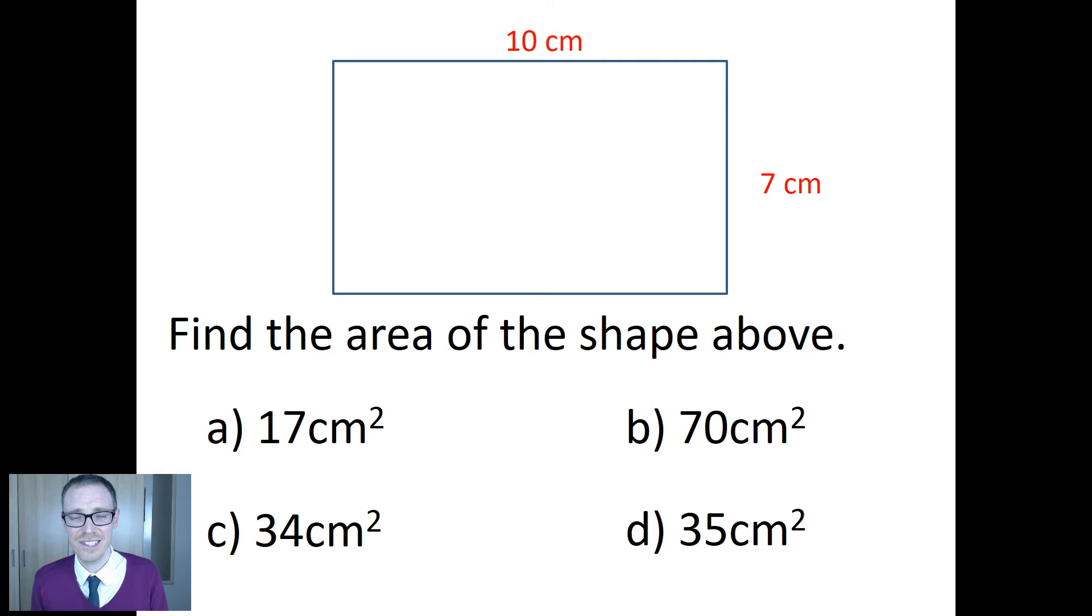But compare that to C. Students who'd answered C have gone for 34. What are they thinking? Well I reckon they're confusing the concept of area with perimeter. Now that's a different misconception, and the help you give those students is going to be different to the help you give the students who answer A.